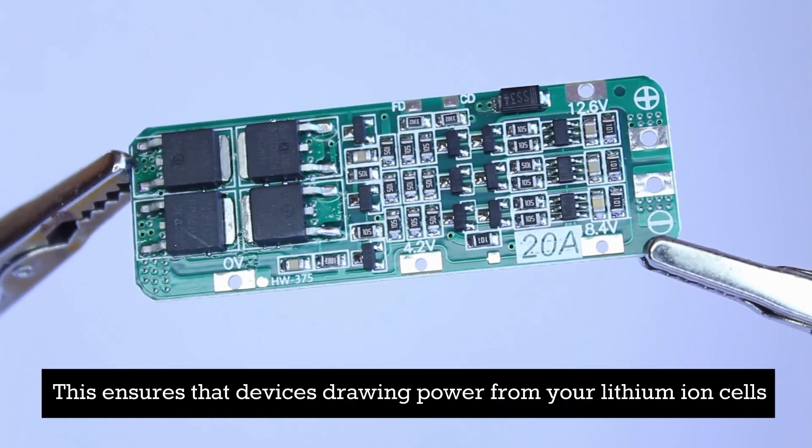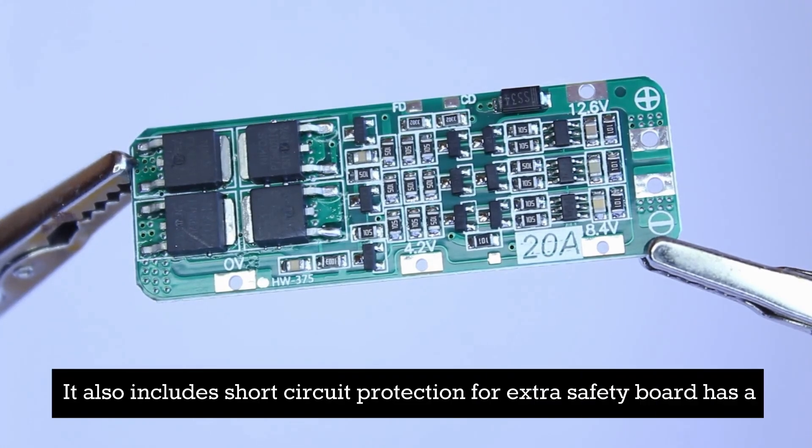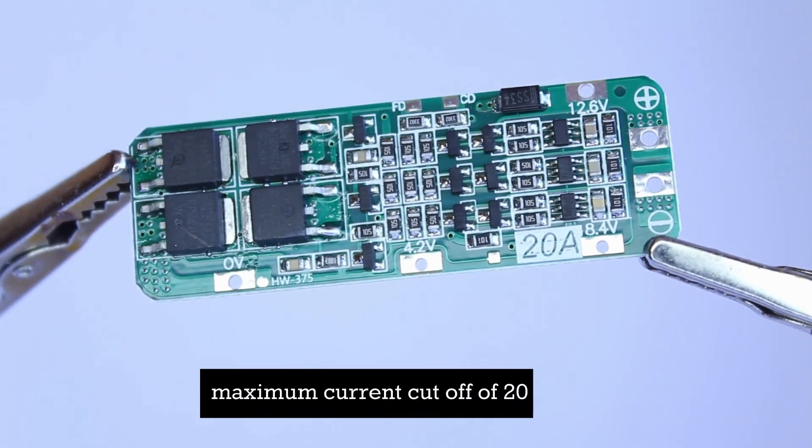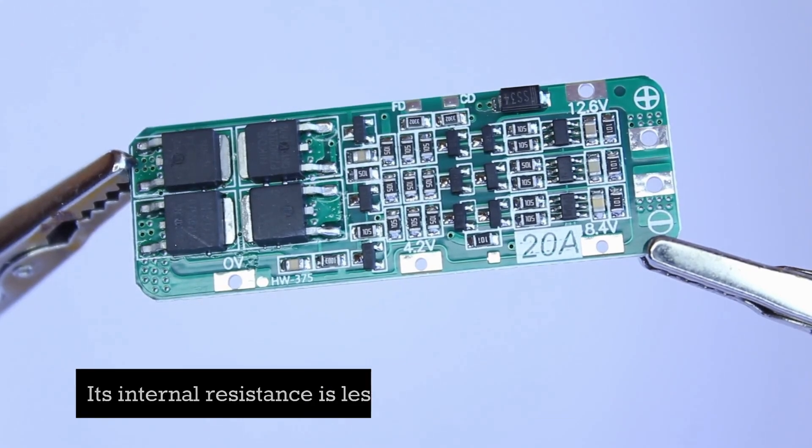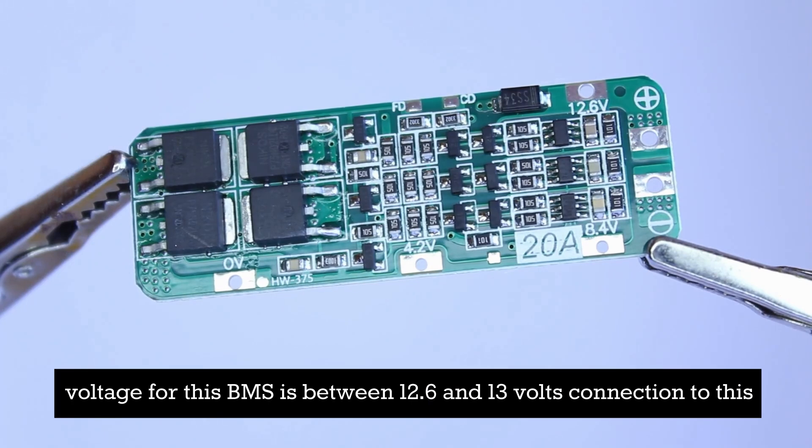This ensures that devices drawing power from your lithium-ion cells won't pull too much current too quickly. It also includes short circuit protection for extra safety. The board has a maximum current cutoff of 20 amps. Its internal resistance is less than 100 milliohms. The charging voltage for this BMS is between 12.6 and 13 volts.